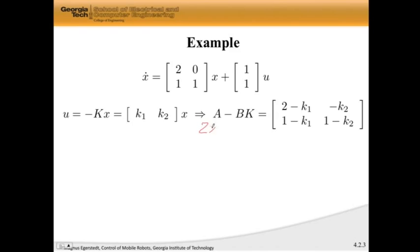K has to be 1 by 2 because A is 2 by 2 and B is 2 by 1. These dimensions have to match. If I compute this, I get the following matrix.